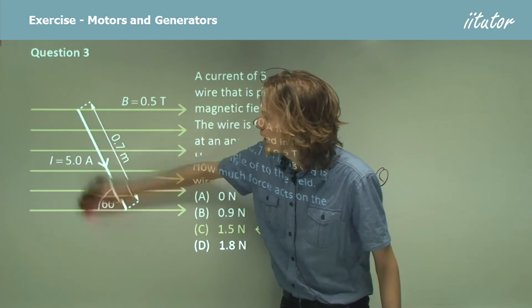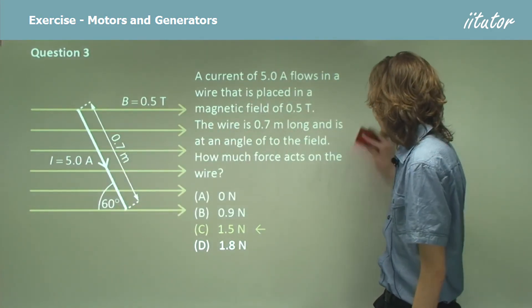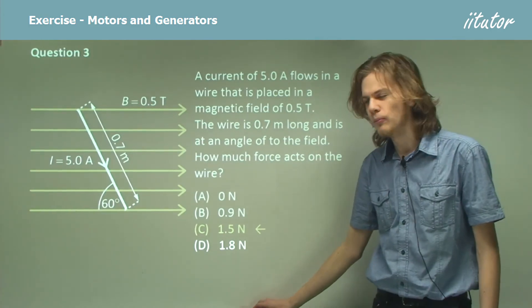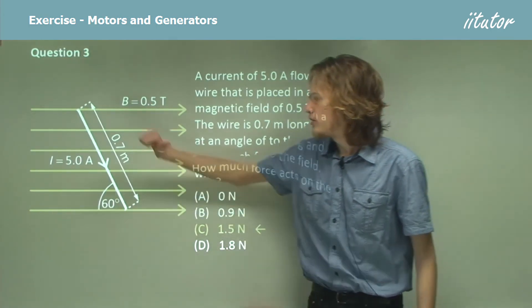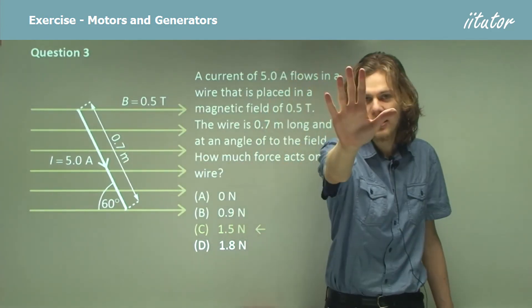If you wanted, you could figure out the direction of this force as well. To find the direction of the force, you have to use the right-hand rule. In this case, the current is going in that direction. The magnetic field is going in that direction, so the force will be in that direction.